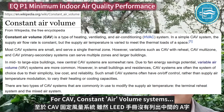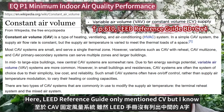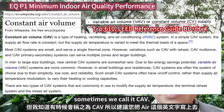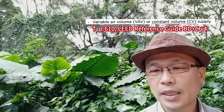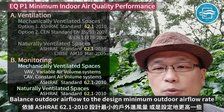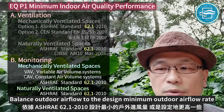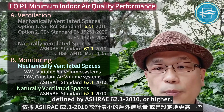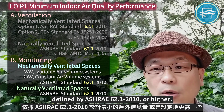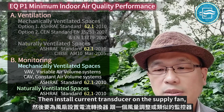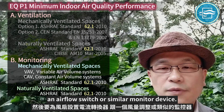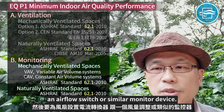For CAV — Constant Air Volume systems — balance outdoor air flow to the design minimum outdoor air rate defined by ASHRAE 62.1-2010 or higher. Then install a current transducer on the supply fan, and an air flow switch or similar monitoring device.